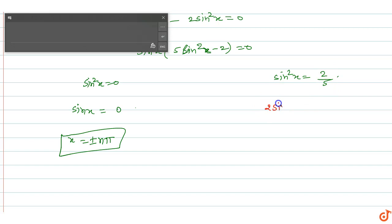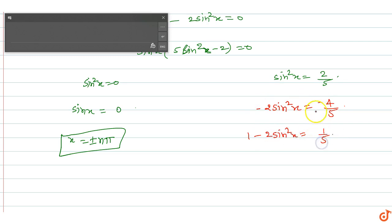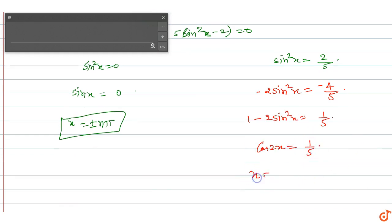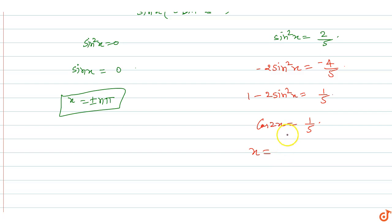For sin²x = 2/5: we use the identity cos 2x = 1 minus 2 sin²x = 1 minus 4/5 = 1/5. So cos 2x = 1/5, which gives 2x = ±cos⁻¹(1/5), and therefore x = nπ ± (1/2)cos⁻¹(1/5).